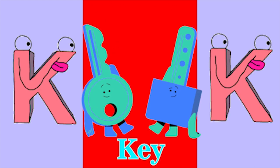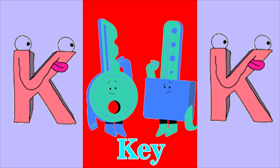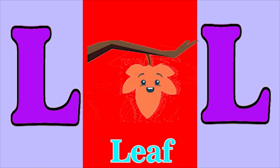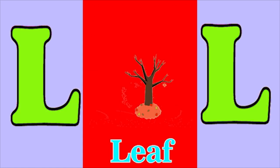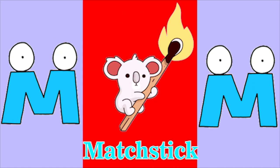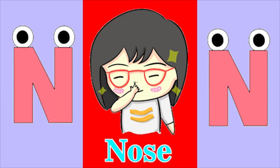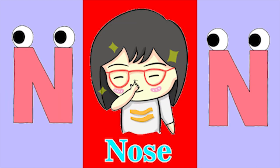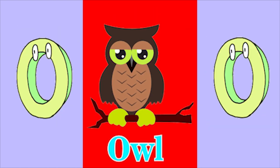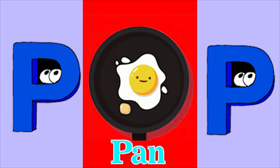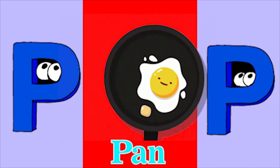K for keet, L for leaf, M for magic, N for nose, O for owl, B for pan.